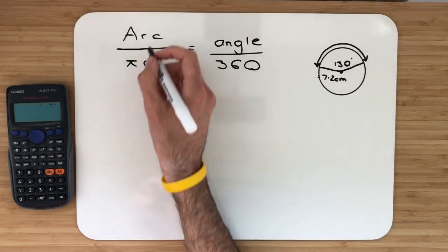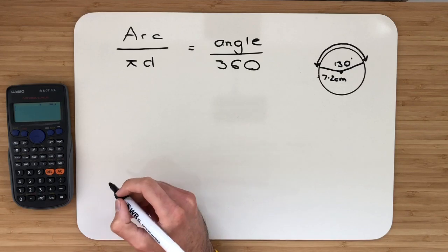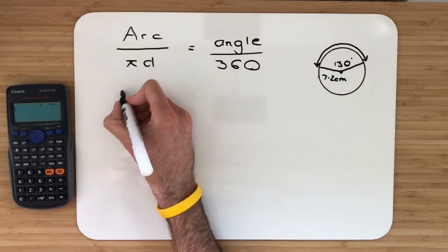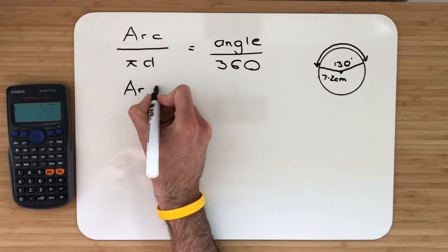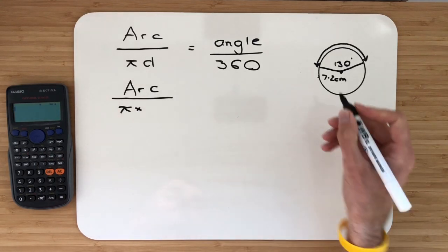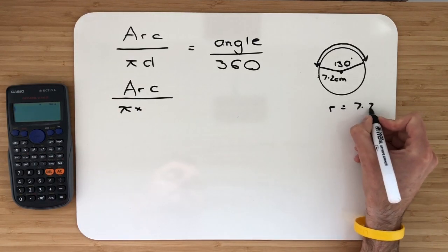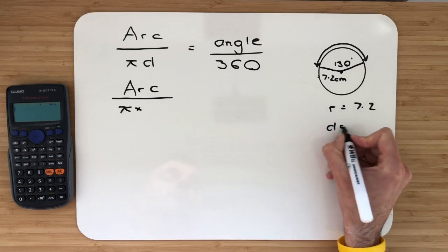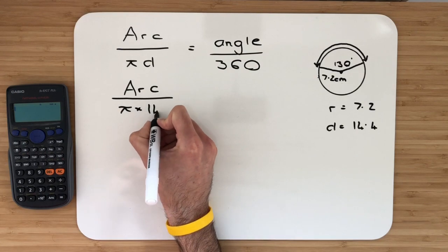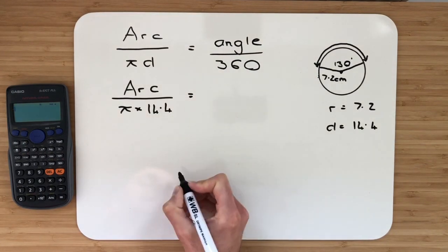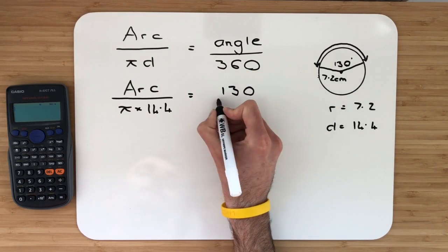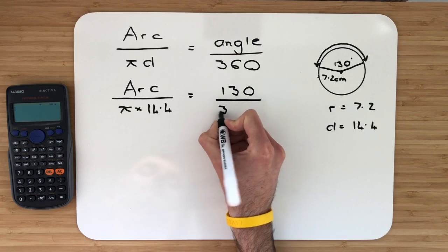We take our formula: arc over pi d. Remember that arc is a fraction of the circumference, and that is equal to the angle at the centre, which is a fraction of 360. I'm looking for my arc, divided by pi multiplied by the diameter. The radius is 7.2, the diameter is double that, which is 14.4. Let's put that into our formula. That is then equal to the angle at the centre. We know that's 130 degrees, and that's a fraction of 360.